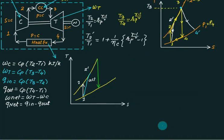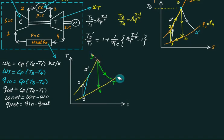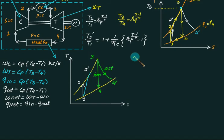Now for the turbine: process 3 to 4 is the isentropic process, and the process ending at 4-dash is the actual process taking place in the turbine. This time the actual enthalpy drop is less than the isentropic enthalpy drop, so turbine isentropic efficiency is defined accordingly.